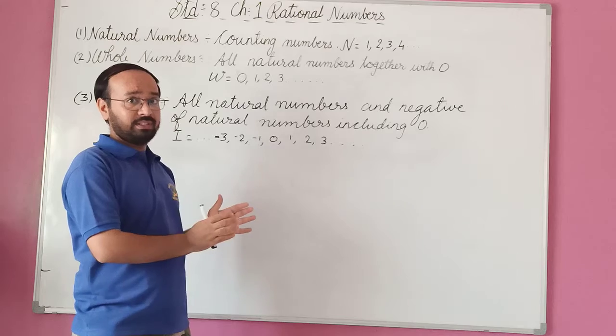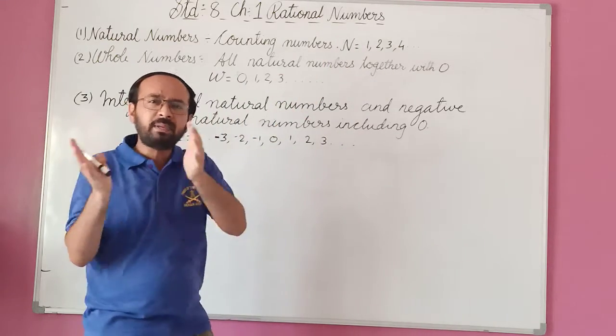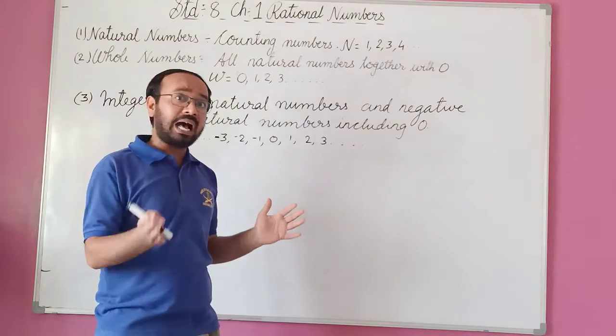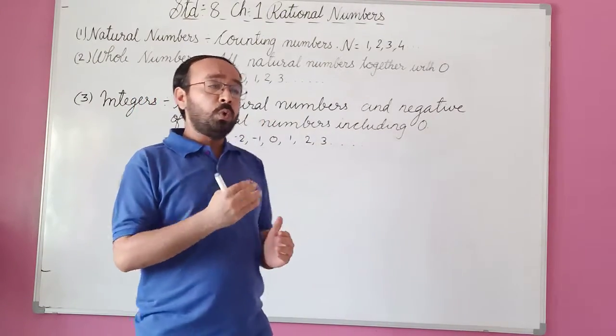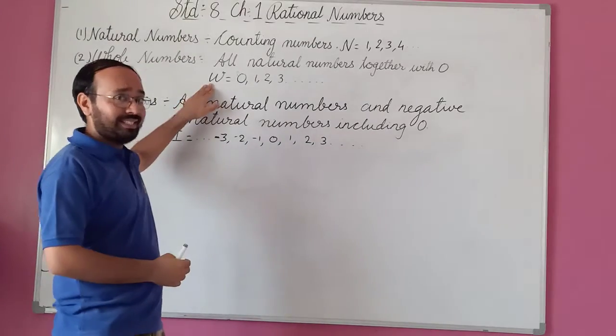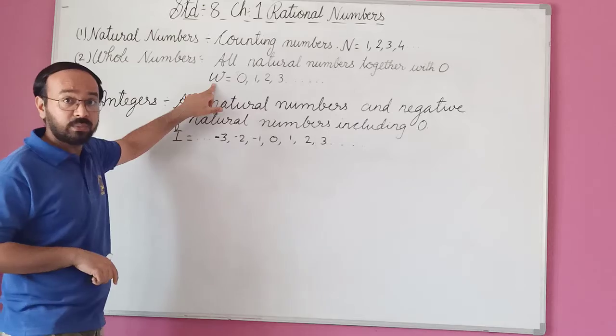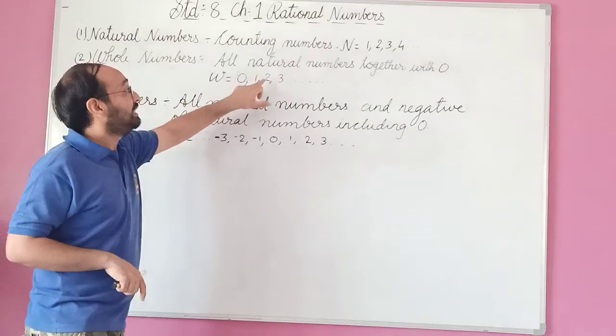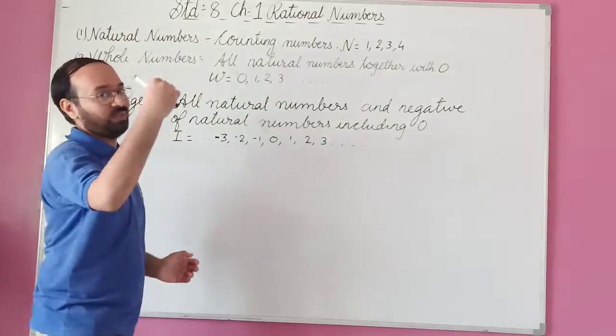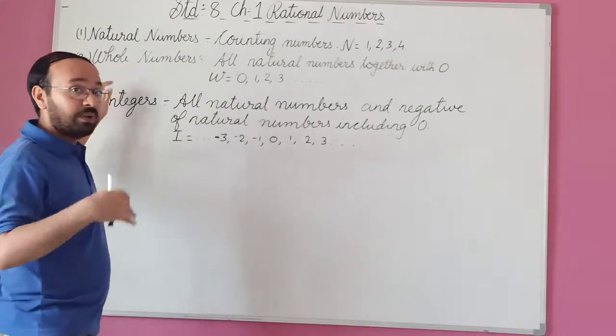All the natural numbers along with zero. So now here you can see that we denote this whole number as W. It starts from zero, one, two, three, it goes on. So now we have seen already the whole numbers.